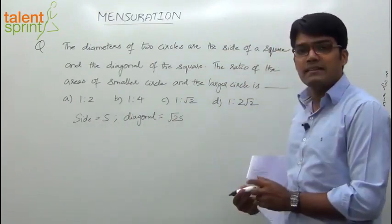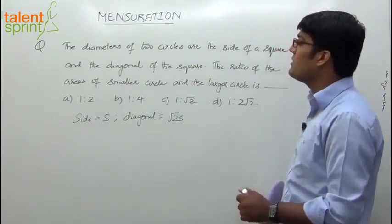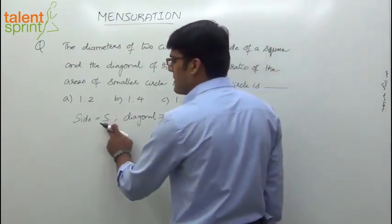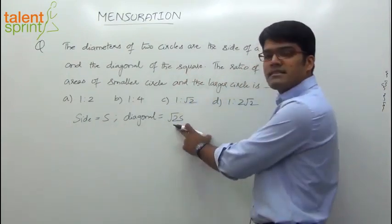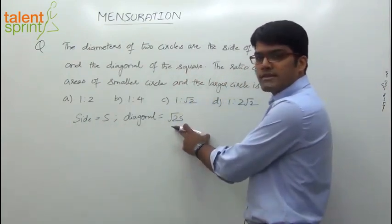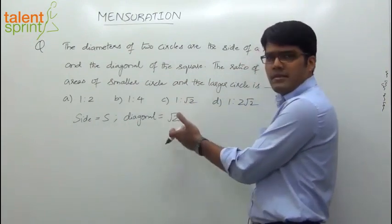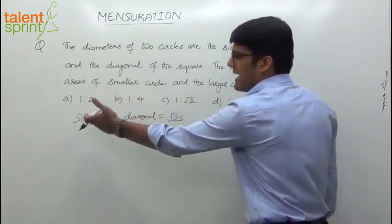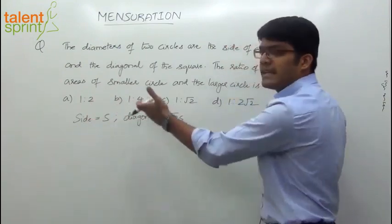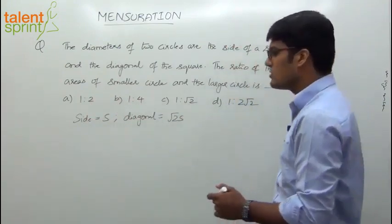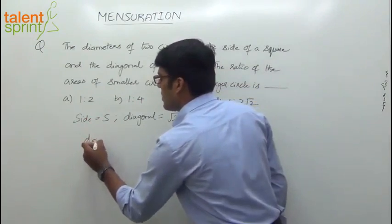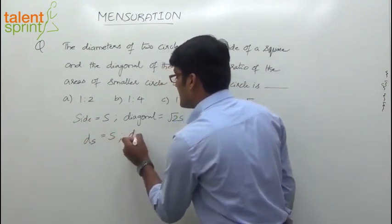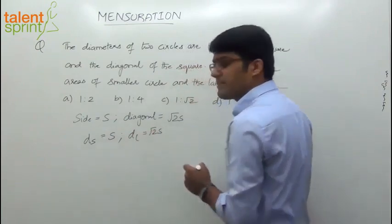Now this side and diagonal are becoming the diameters of two circles. The smaller circle's diameter will be S and the larger circle's diameter will be root 2S. The larger diameter obviously has to be more than the smaller circle's. Root 2S is more than S. So the diameter of the smaller circle is S and the diameter of the larger circle is root 2S.